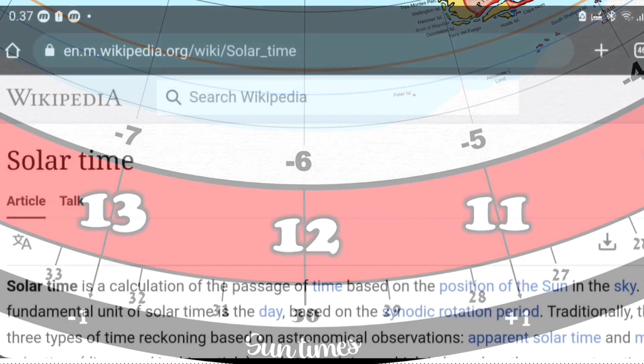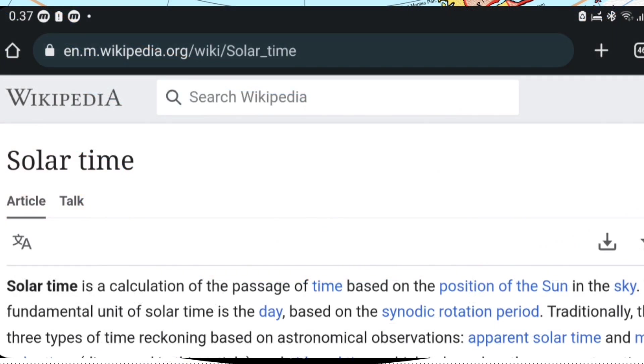Solar sun time is the time in which noon 12 o'clock is that moment when the sun is at its highest point on the sky of that particular place. Most countries and cities are in solar time either during summer or winter time.